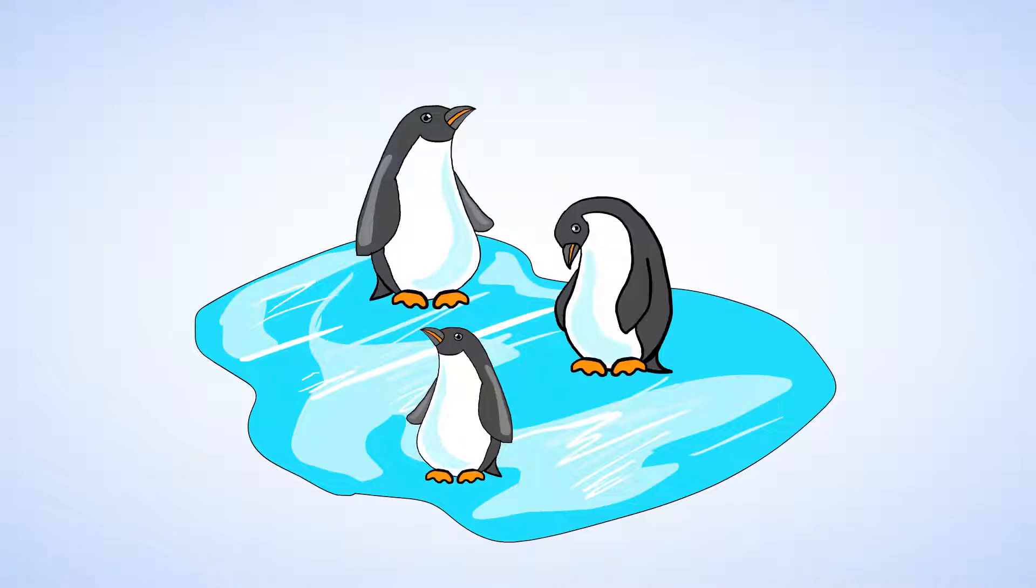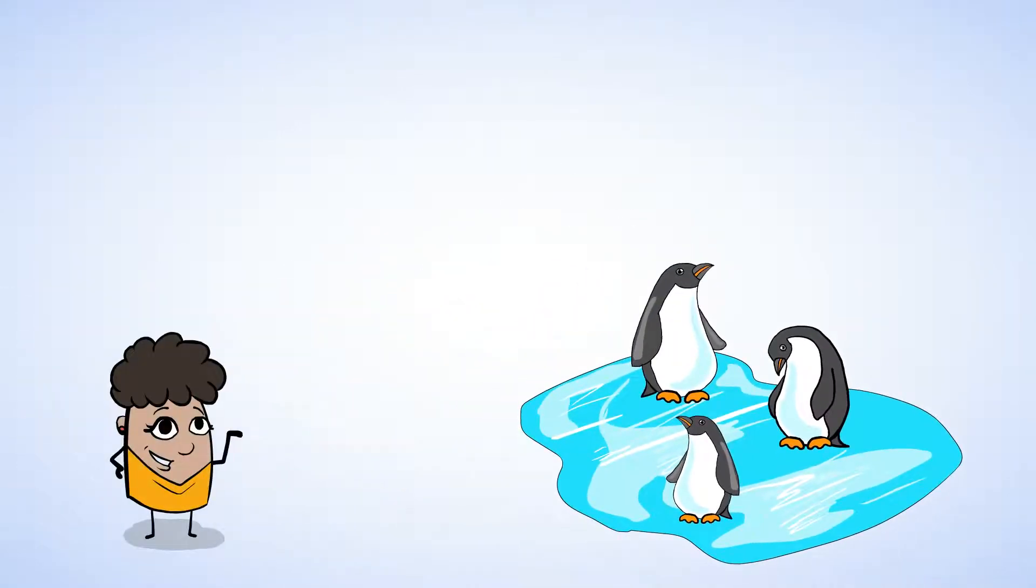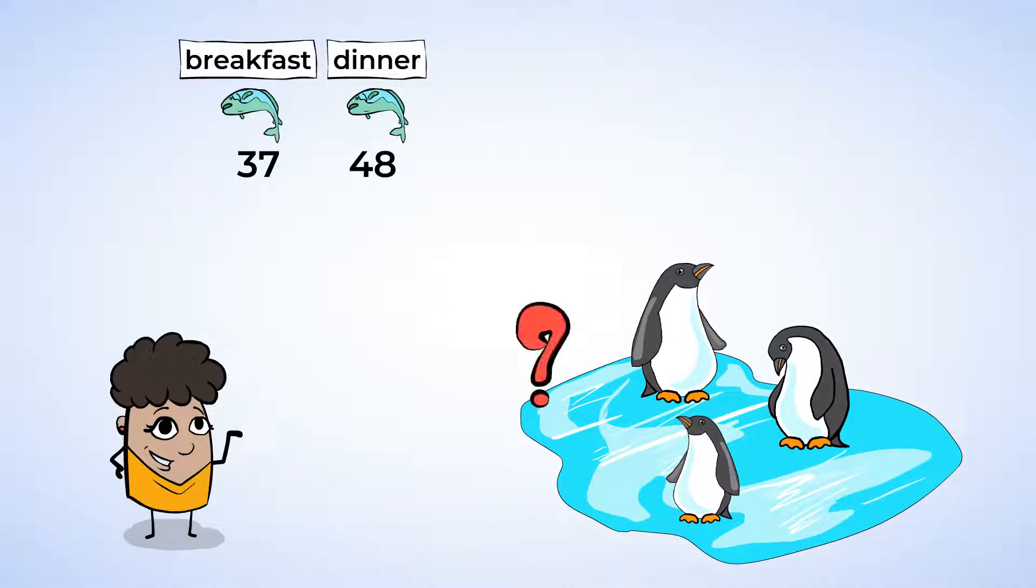Over here are some penguins. The sign says a penguin eats 37 fish for breakfast and 48 fish for dinner. How many fish does a penguin eat in a day? We can use addition again. To solve this, we need to add 37 and 48.